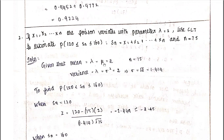We have μ = 2, σ = √2, and n = 75. We need to find P(120 ≤ Sn ≤ 160), which is a probability value using the Central Limit Theorem.